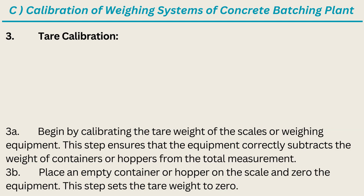Step 3: Tare Calibration. A. Begin by calibrating the tare weight of the scales or weighing equipment. This step ensures that the equipment correctly subtracts the weight of containers or hoppers from the total measurement. B. Place an empty container or hopper on the scale and zero the equipment. This step sets the tare weight to zero.